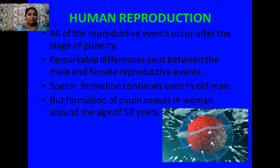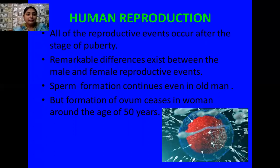Puberty is a vulnerable phase of the human life cycle. One very important point is that remarkable differences exist between male and female reproductive processes. Sperm formation continues in men even up to old age, but the formation of ovum generally ceases in women around the age of 50 years. That stage is known as menopause, where the reproductive cycles generally stop and the female is no longer able to produce ova.